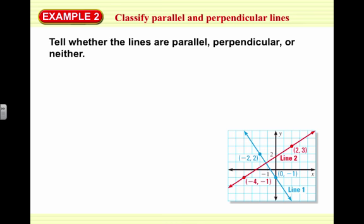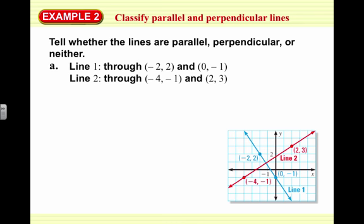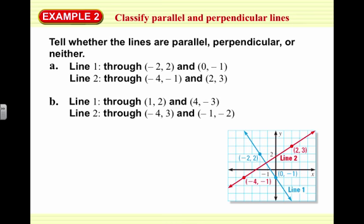Tell whether the lines are parallel, perpendicular, or neither. Line 1 goes through negative 2, 2 and 0, negative 1, and line 2 goes through 4, negative 1 and 2, 3. Obviously they're not parallel, but let's see if they're perpendicular — because two lines could intersect and not be perpendicular. We show perpendicularity by showing the slopes are negative reciprocals of each other.